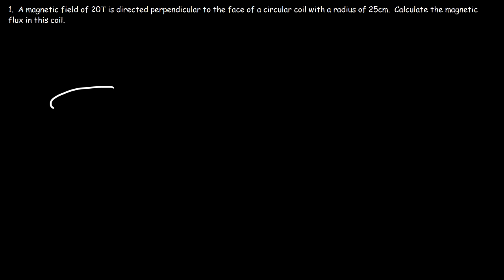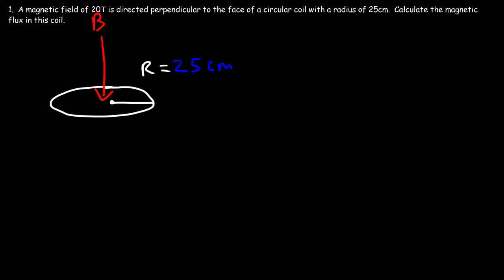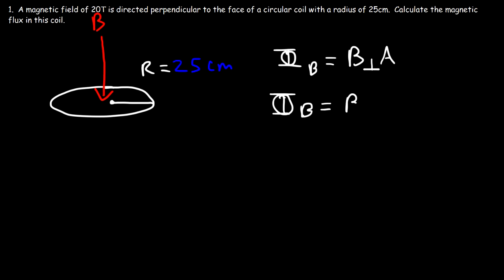In this problem we have a circular coil with a radius of 25 centimeters and a magnetic field that is perpendicular to the face of the coil. We need to calculate the magnetic flux, represented by the symbol Φ. The magnetic flux is B times A, where B is the component of the magnetic field perpendicular to the plane of the coil. So for this problem, the magnetic flux is B times the area of the circle.